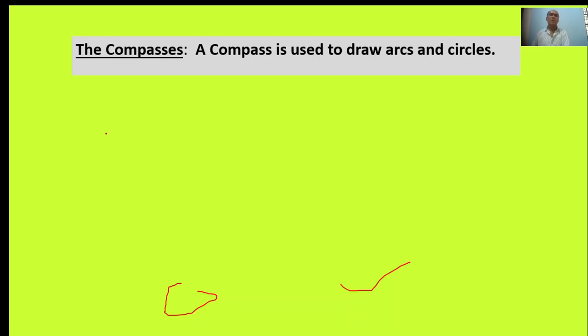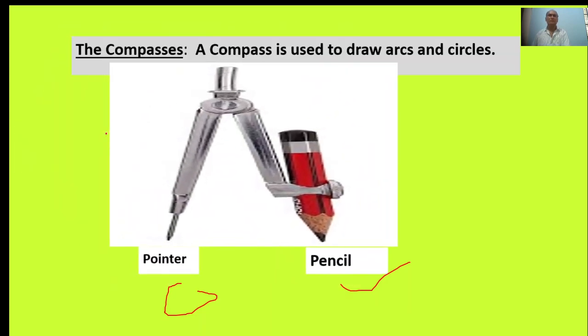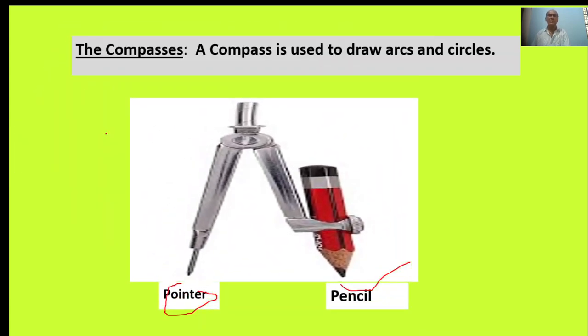Next, the compasses. A compass is used to draw arcs and a circle. Here, an image is given. This is called compasses. Here is the pointer, and here is the pencil user.